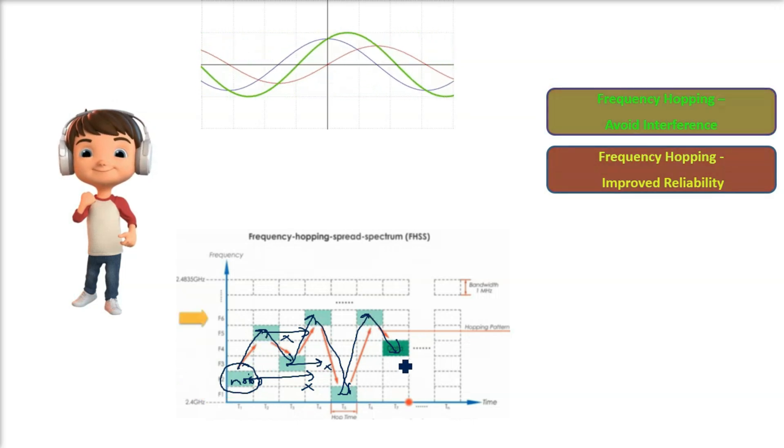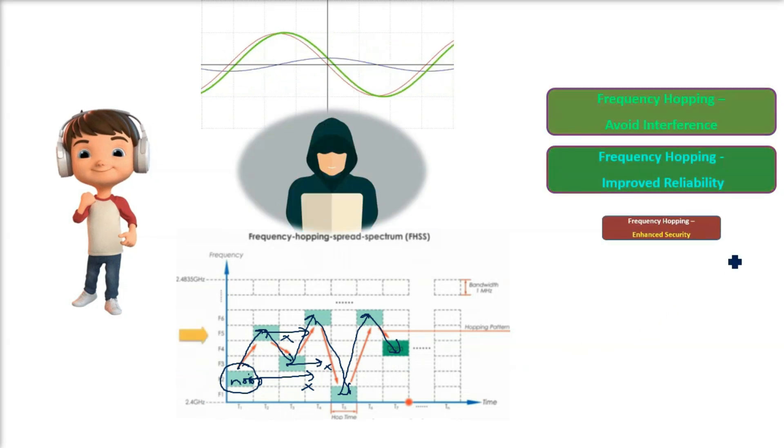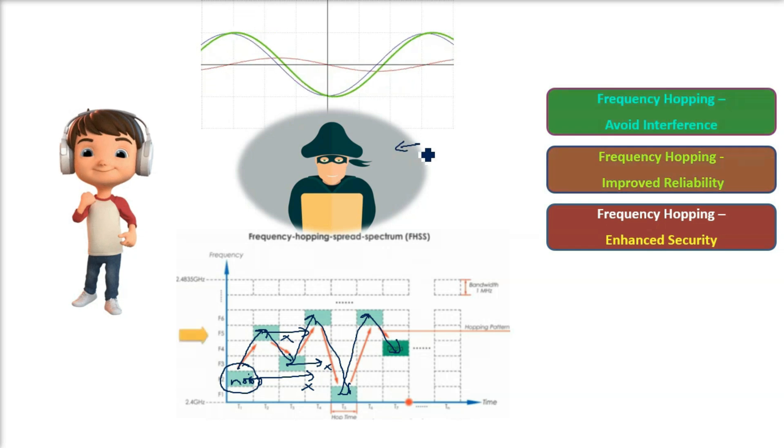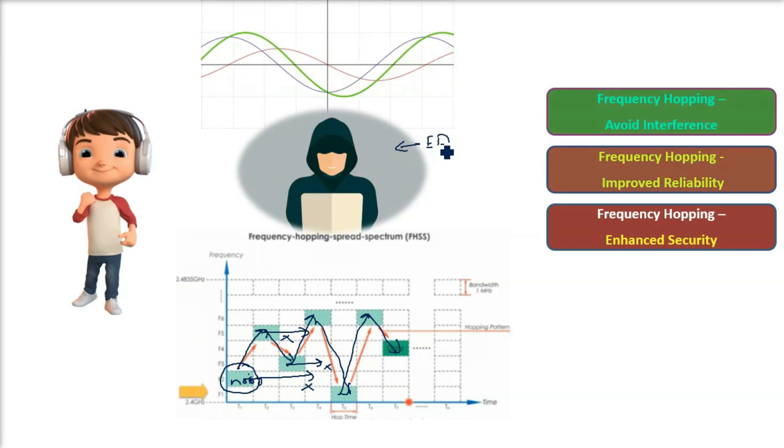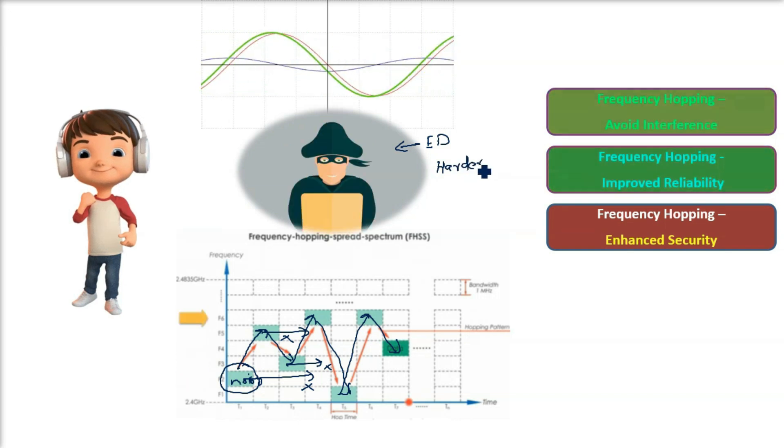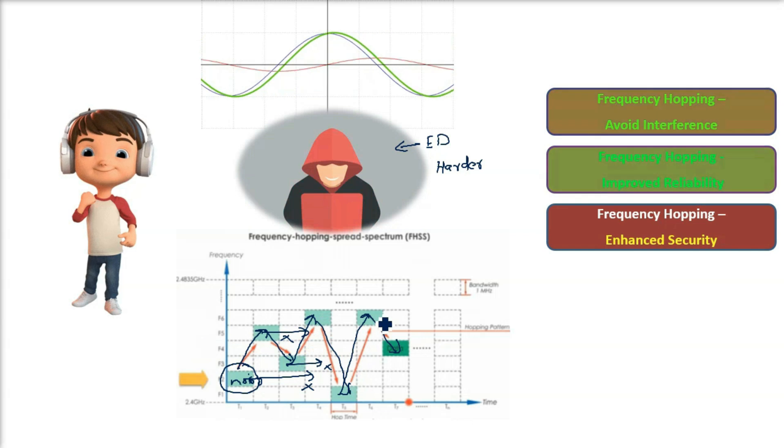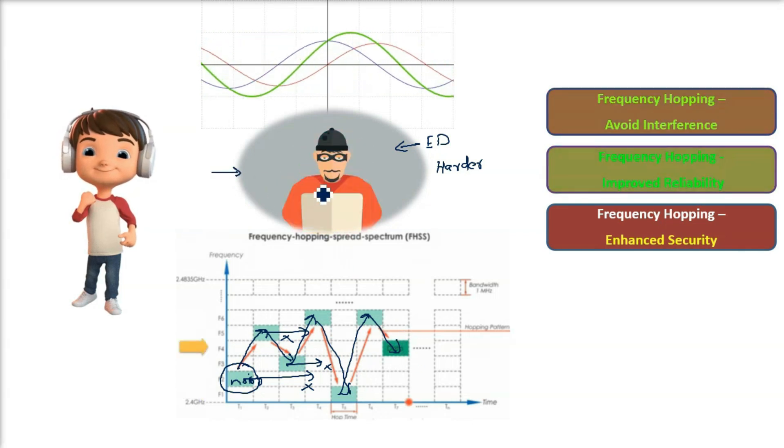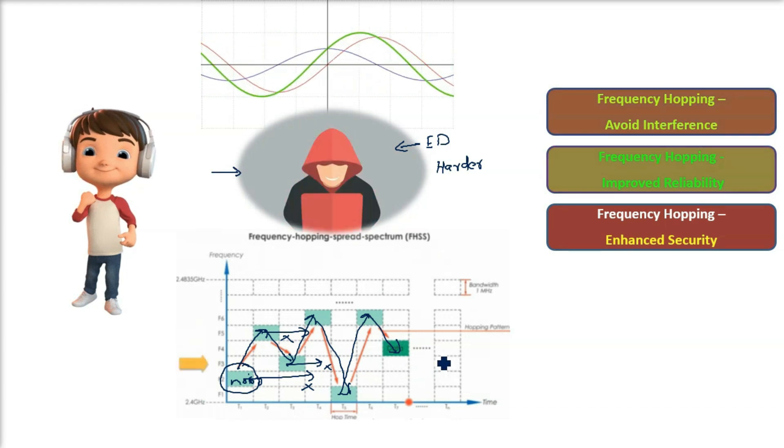Frequency hopping also enhances security. How? Eavesdropping is very difficult or almost impossible because the signal keeps moving to different frequencies. An attacker would need to predict or anticipate the hopping pattern, which is almost impossible without prior knowledge.